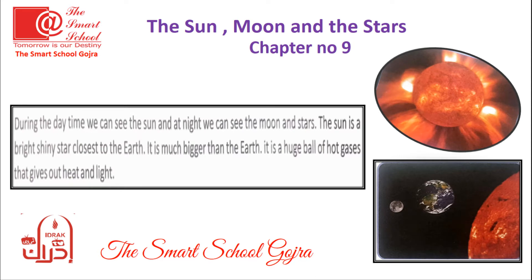Now we will read the lesson. What do you see in the sky during the daytime? What do you see in the sky during the night? During the daytime we can see the sun, and at night we can see the moon and stars. (Din ke waqt hum asman par suraj, aur raat ke waqt chaand aur sitare dekhte hain.)